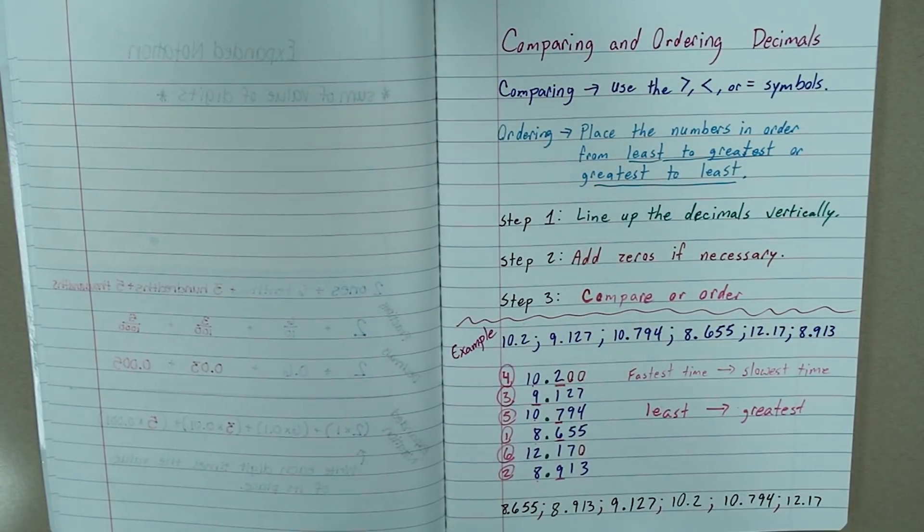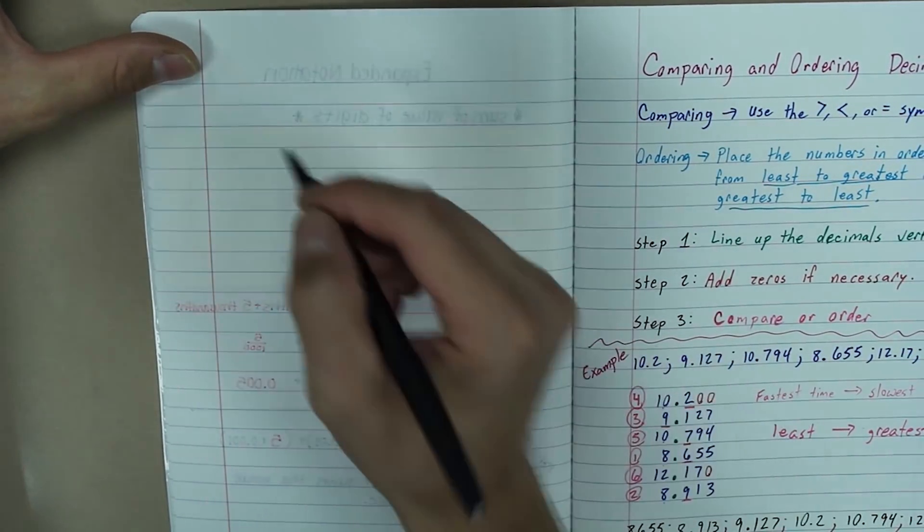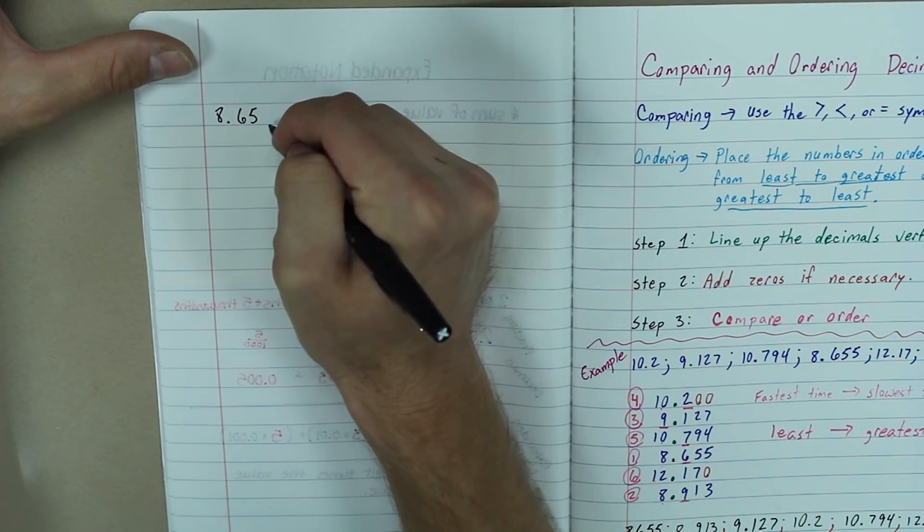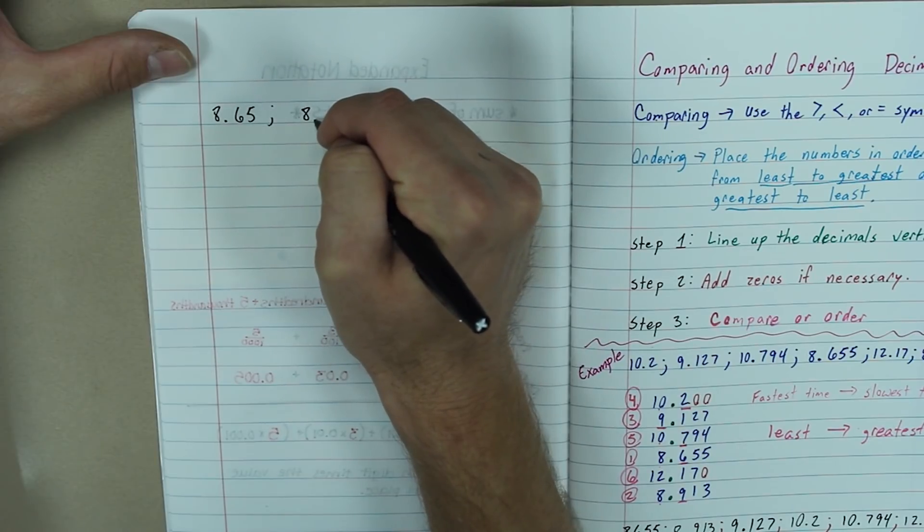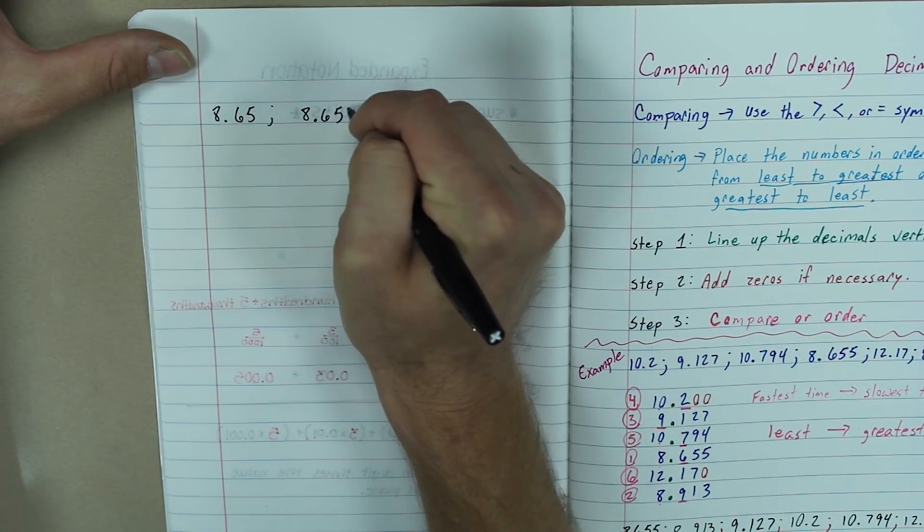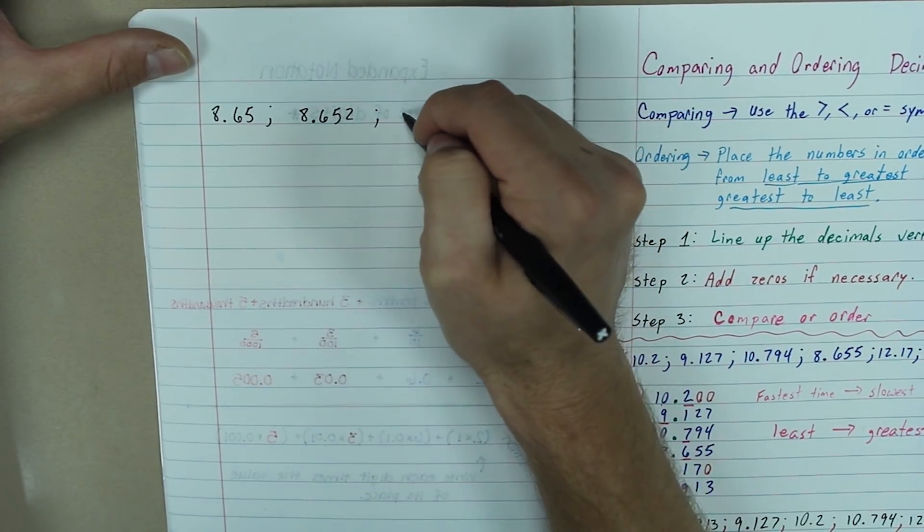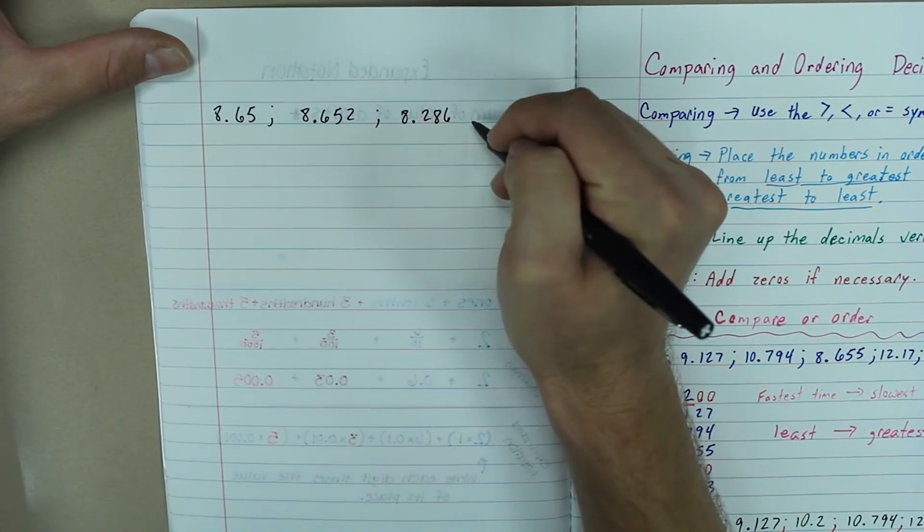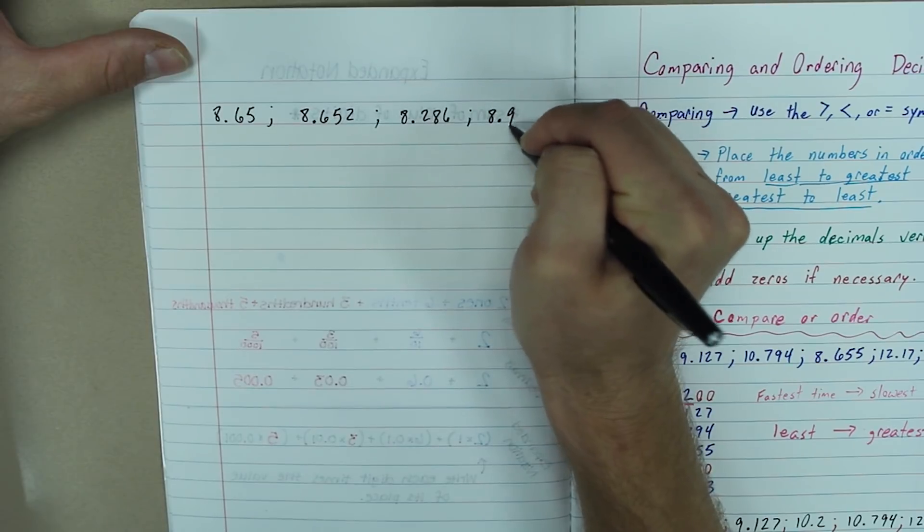Now, what I want to do is I am going to give you a list of problems on your left side using these same steps. So, let's try it with 8.65, 8.286, and last, 8.9.